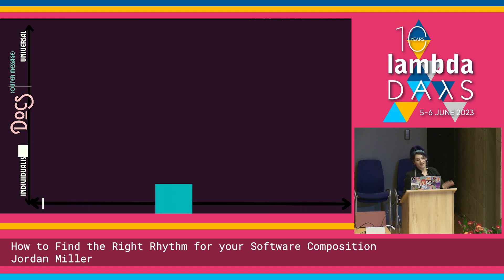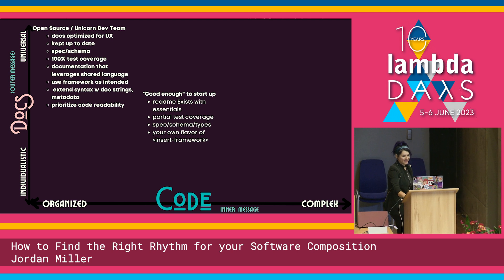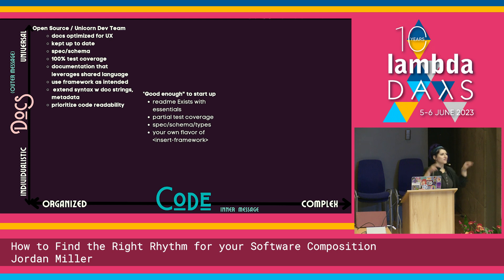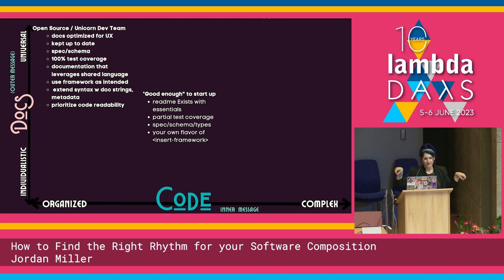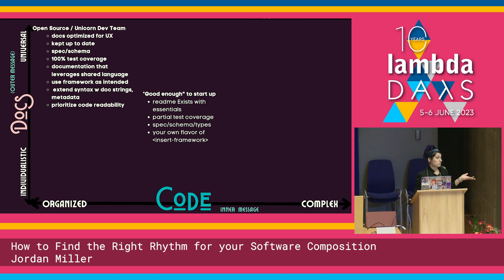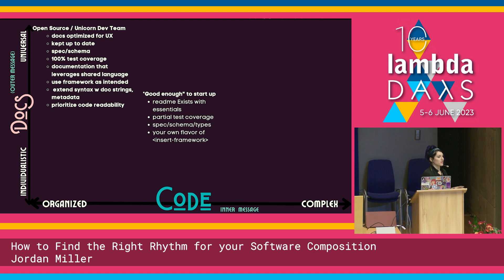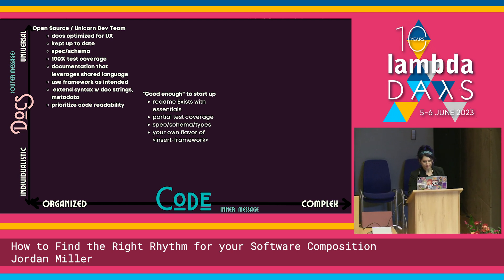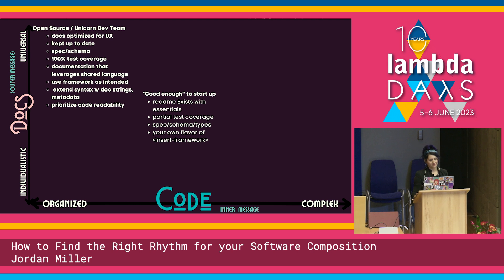In the middle, this is where most of us usually are. Documentation that is in between individualistic and universal — it's okay. And code that is also kind of in the middle. I call this 'good enough to start up.' A README exists, it has some essentials, you have some important test coverage, and maybe it was your first time using this framework so you didn't quite use it appropriately, but it follows most of the conventions.